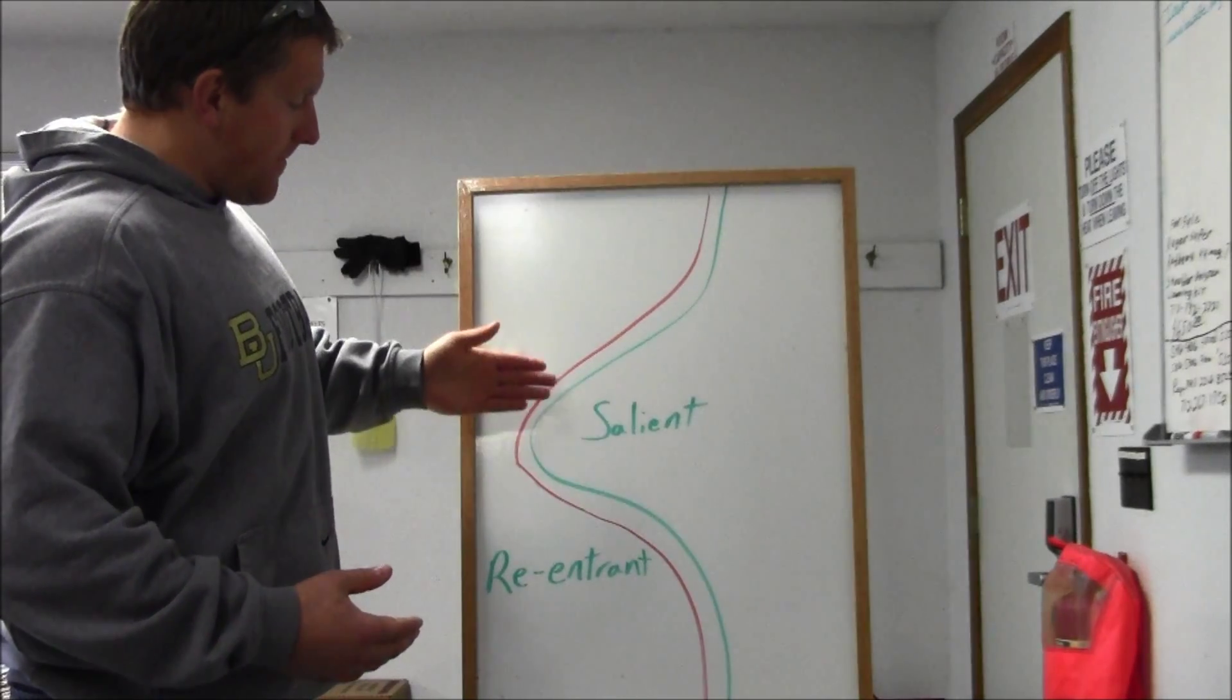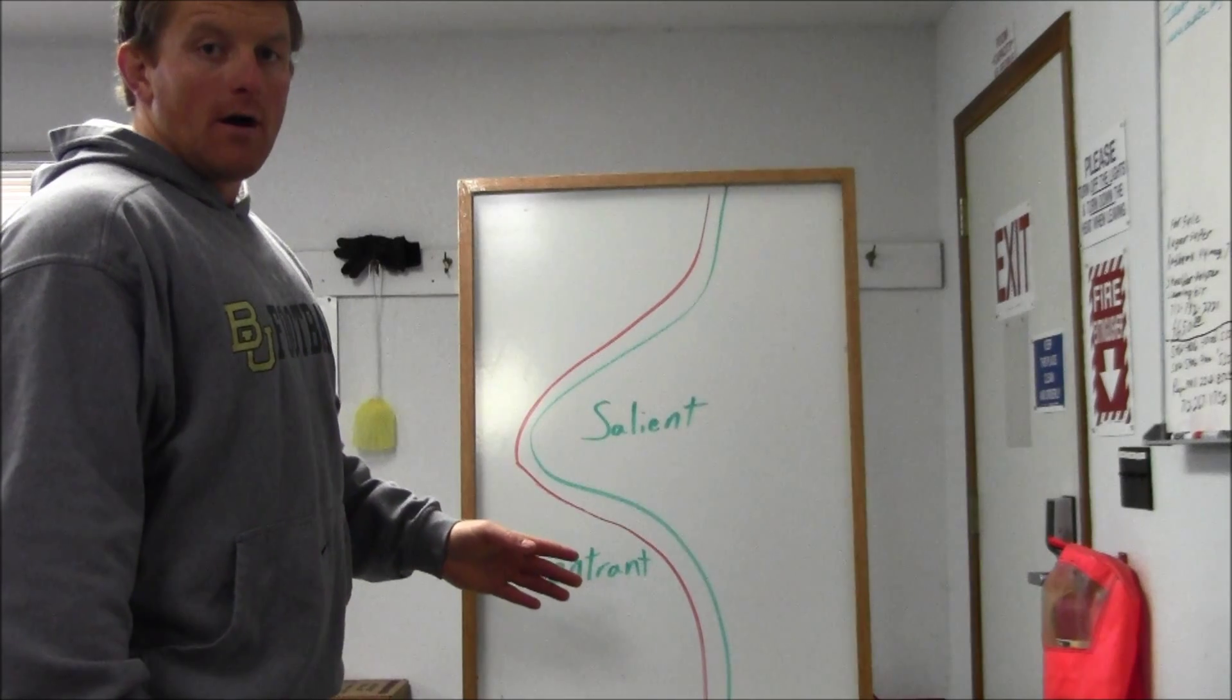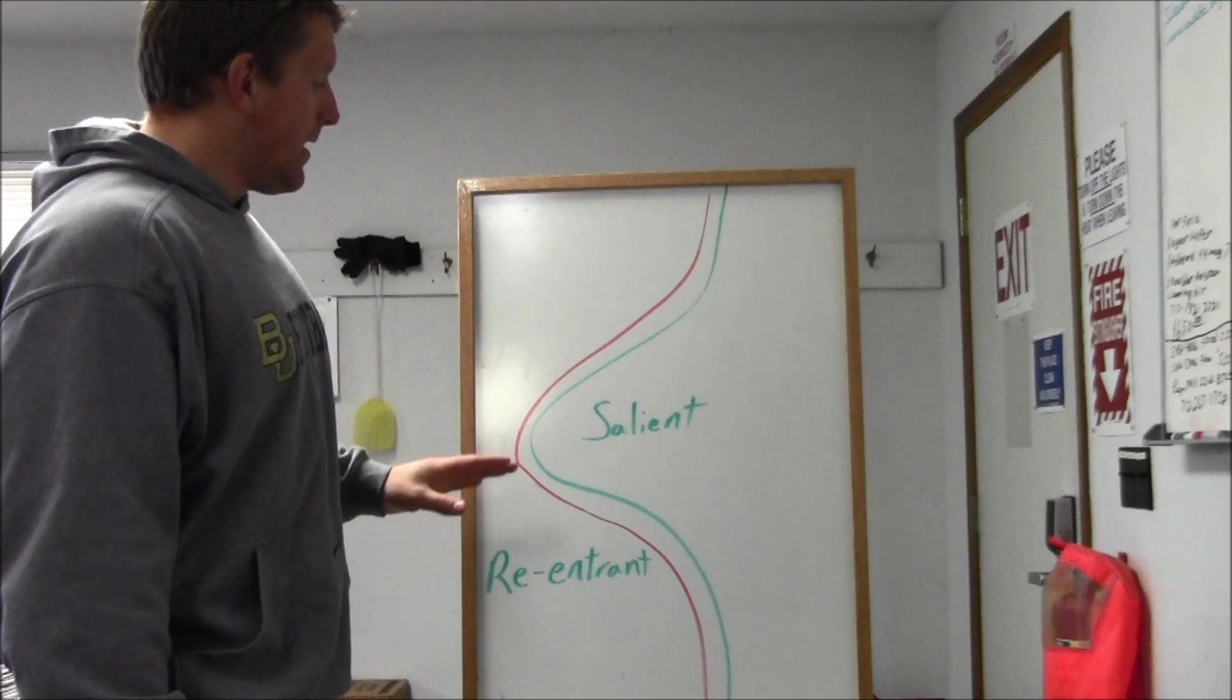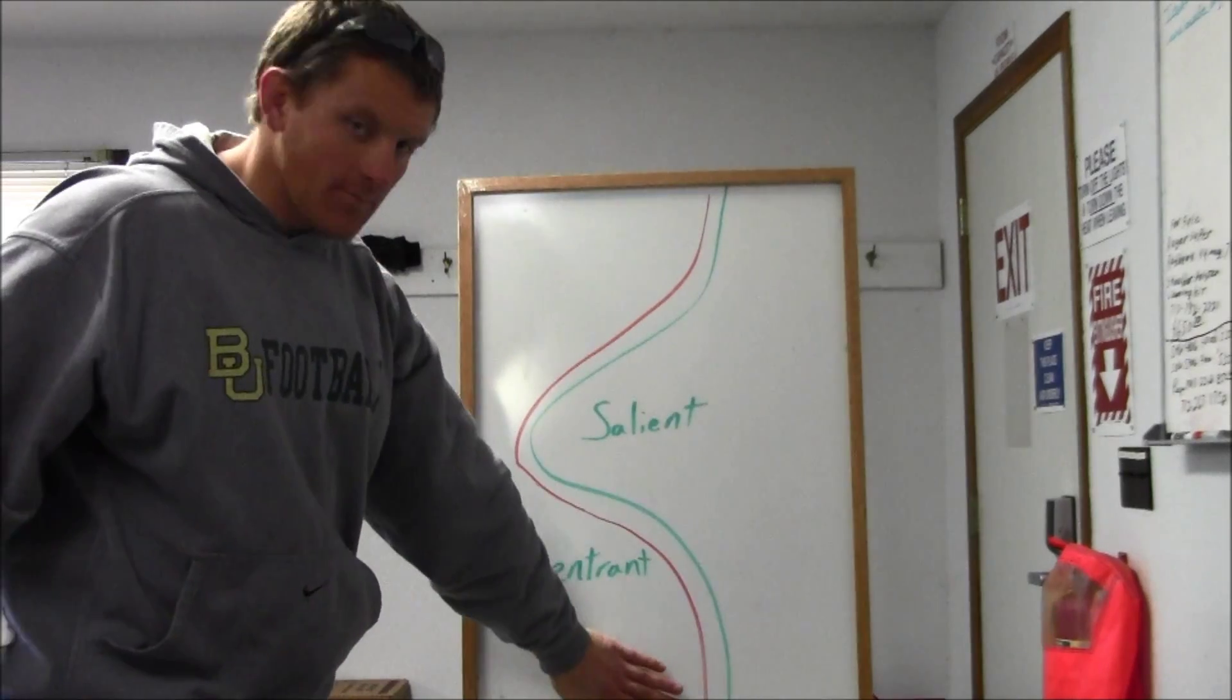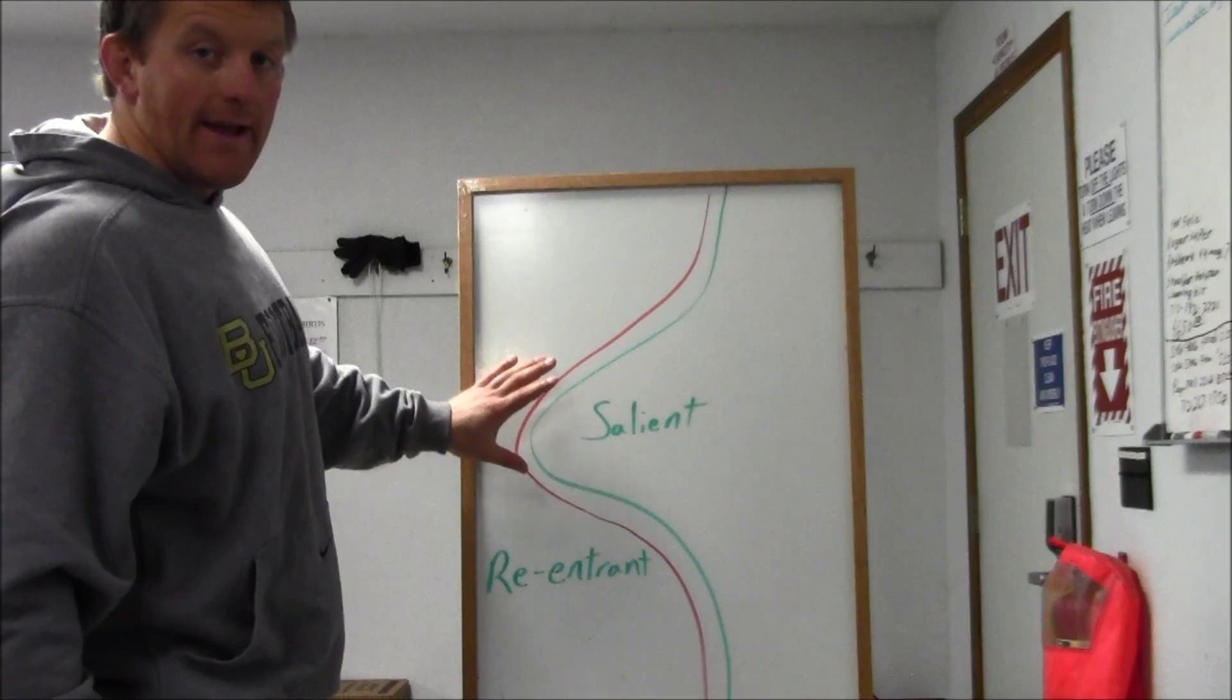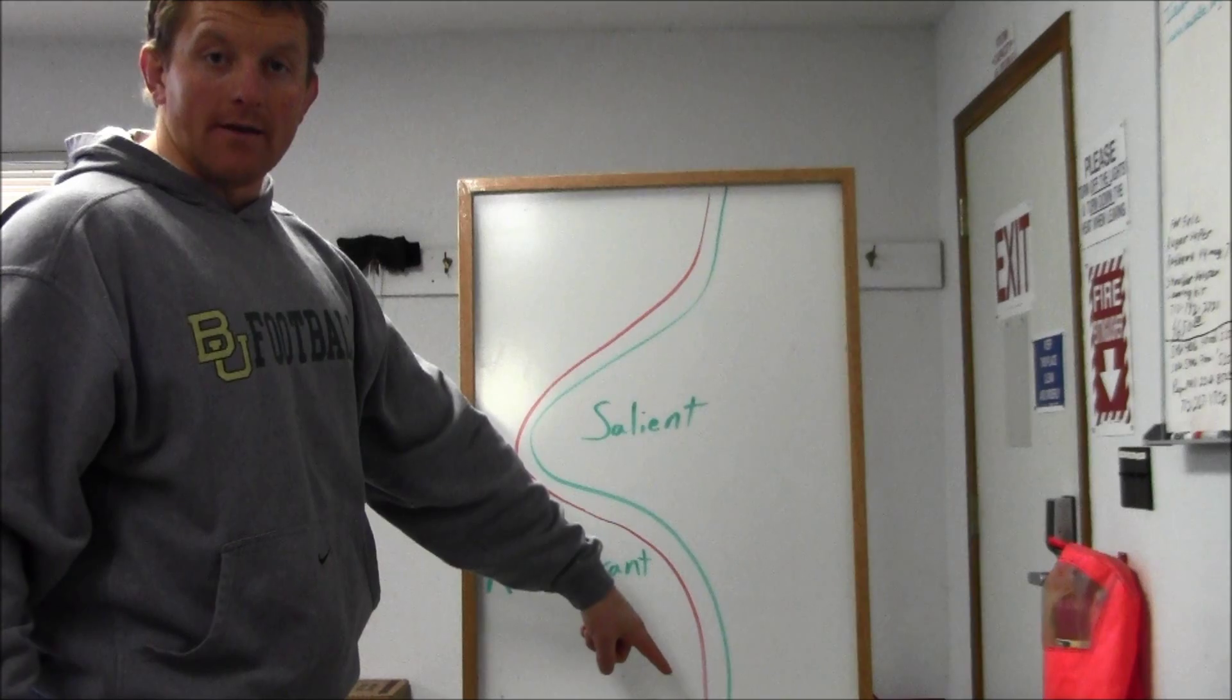On its head, basically a salient is a protrusion in the front line that can be caused by one of a couple of ways. The most common way is an attacking force is attacking and they meet much more resistance on the two flanks than they do in this center area. And so they're able to advance further before they actually stop. Now you have this massive protrusion into the line.